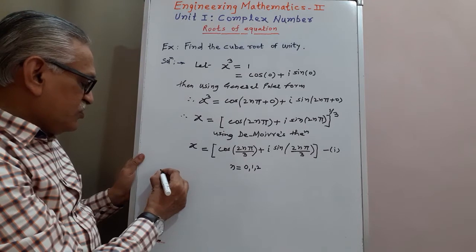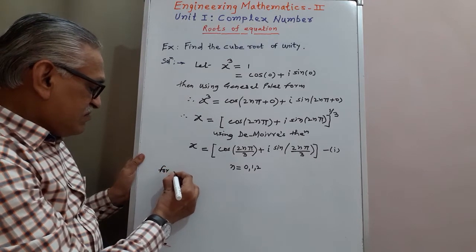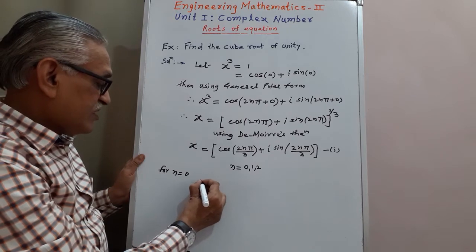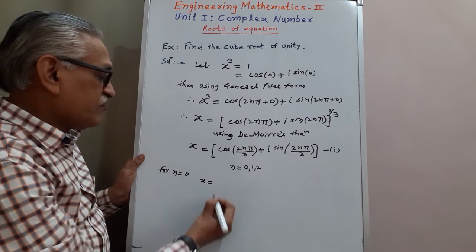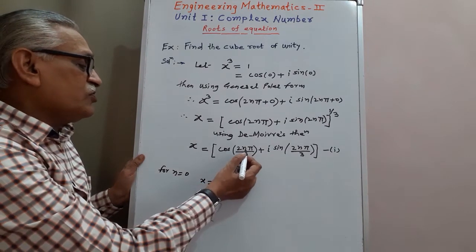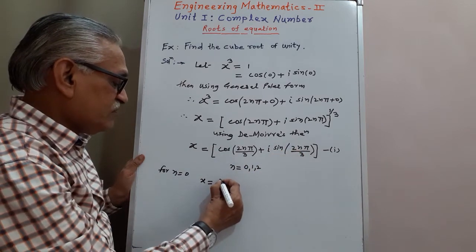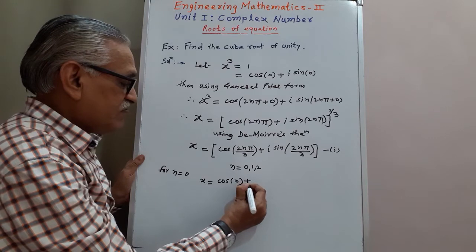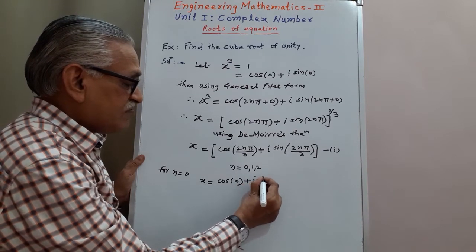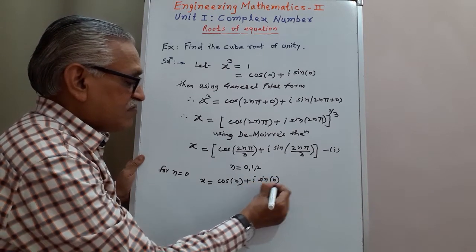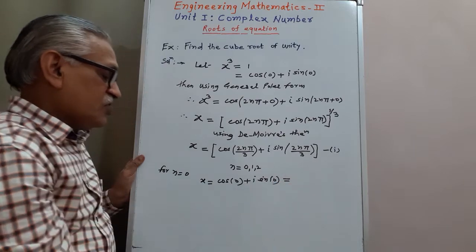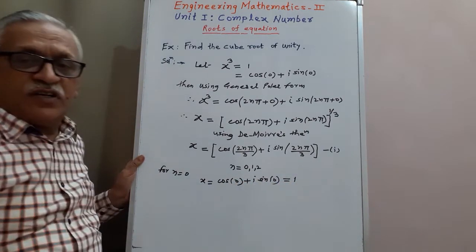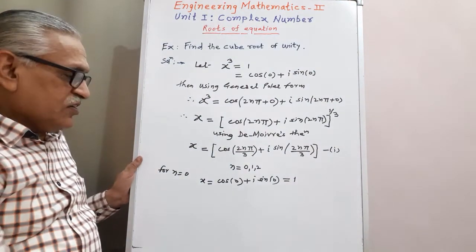For n equal to 0, we get x equal to cos 0 plus i sine 0. Therefore the first root is 1.